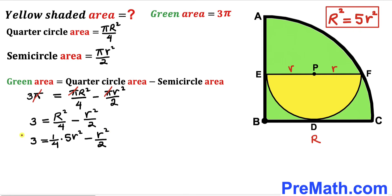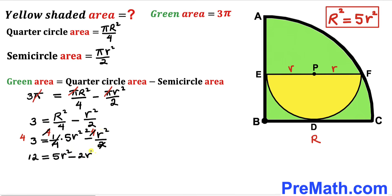Multiplying through by 4: 12 = 5r² − 2r², which simplifies to 3r² = 12. Dividing both sides by 3, we get r² = 4.